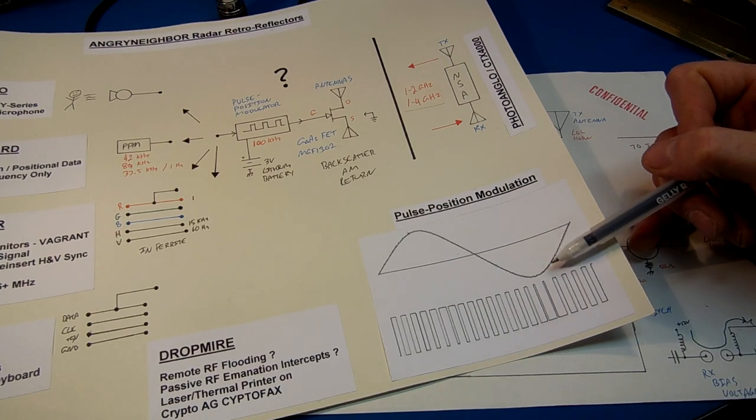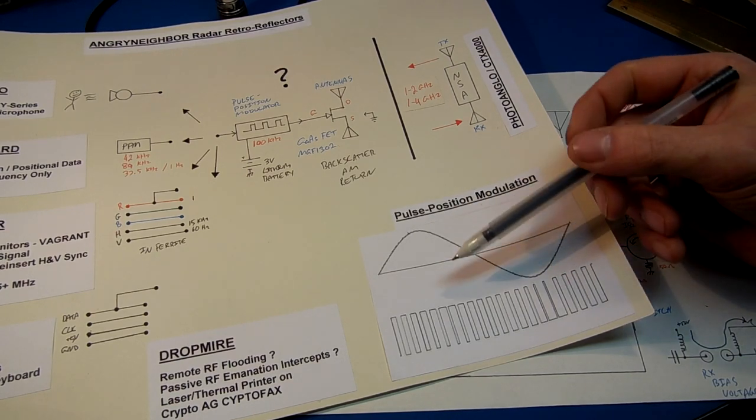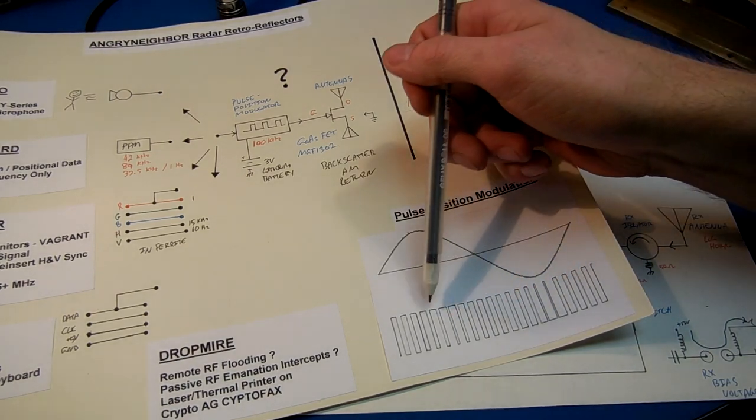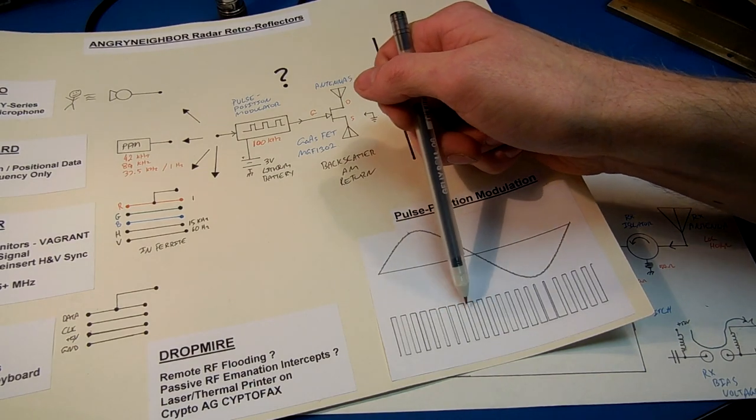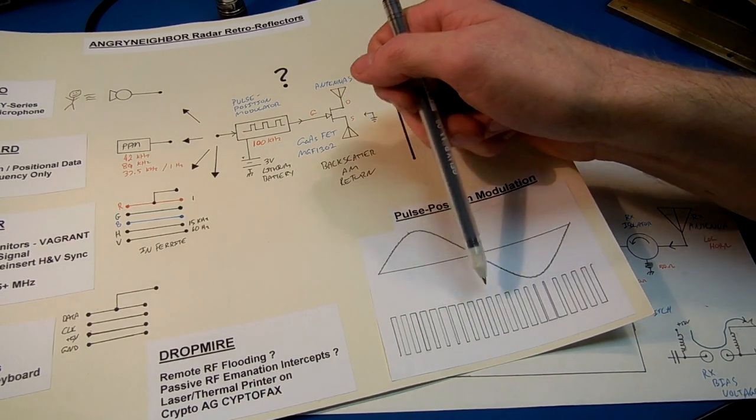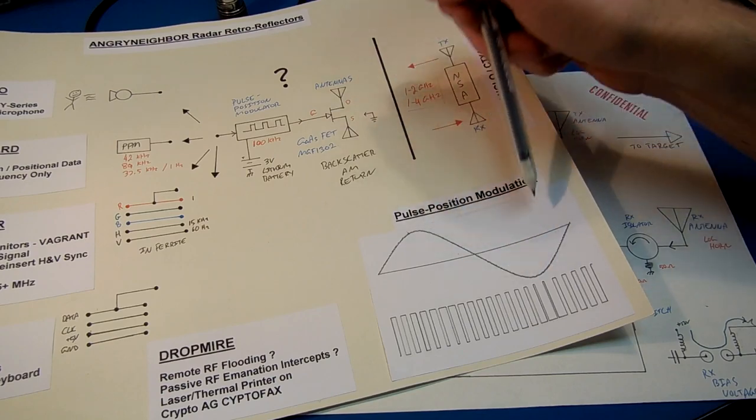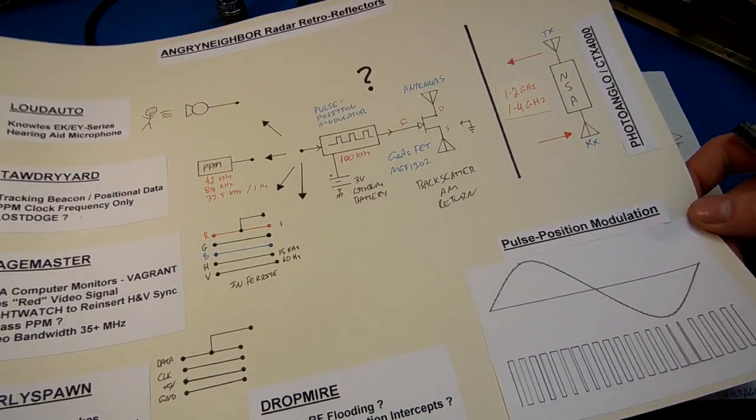Here's kind of an idea how the pulse position modulation works. It just creates pulses of square waves in relative position of the audio signal. It's a very common type of modulation.